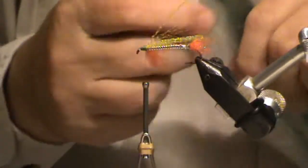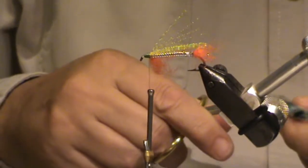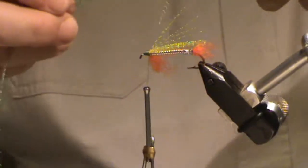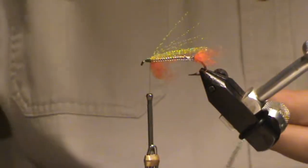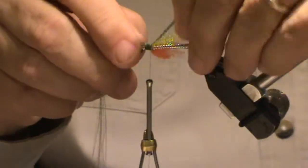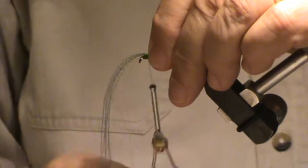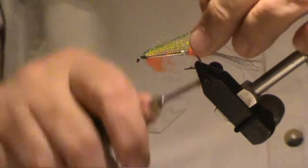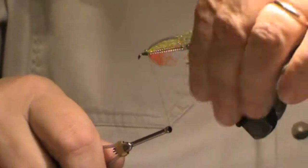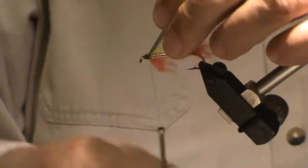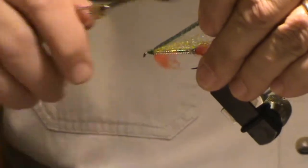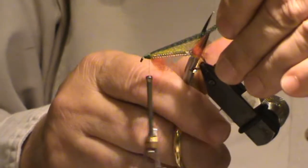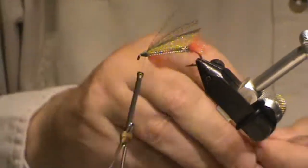And then, this is Peacock Crystal Flash. You want about the same amount. Put it right up on top there. Again. Pull it back over the top. And again. Tie it off.